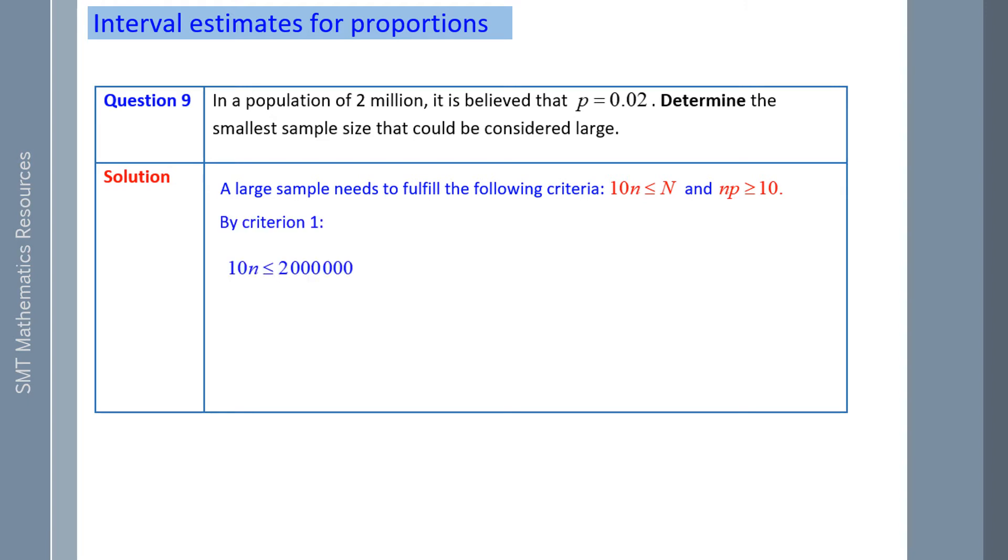So by criterion 1, we have 10 lots of N, it has to be less than or equal to the population N, which is 2 million. We divide both sides by 10. N has to be less than or equal to 200,000.